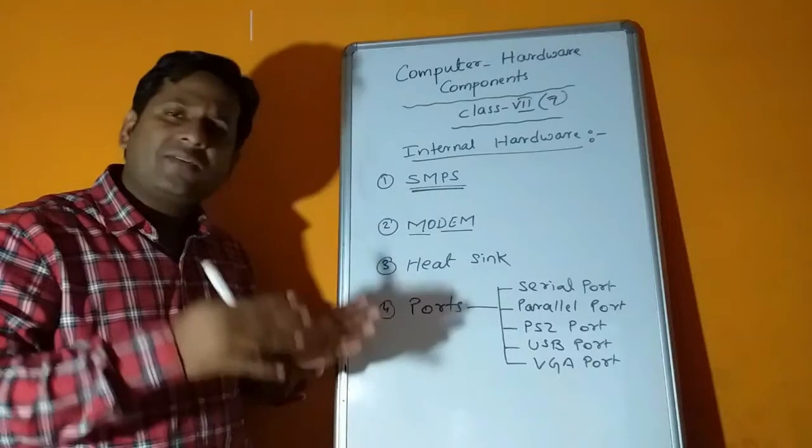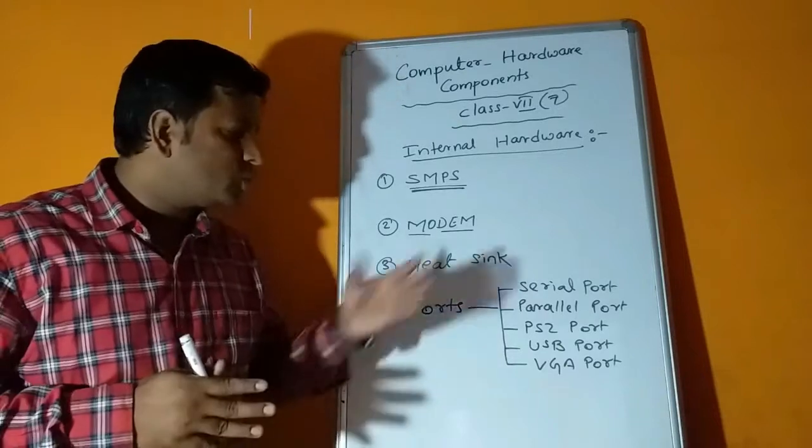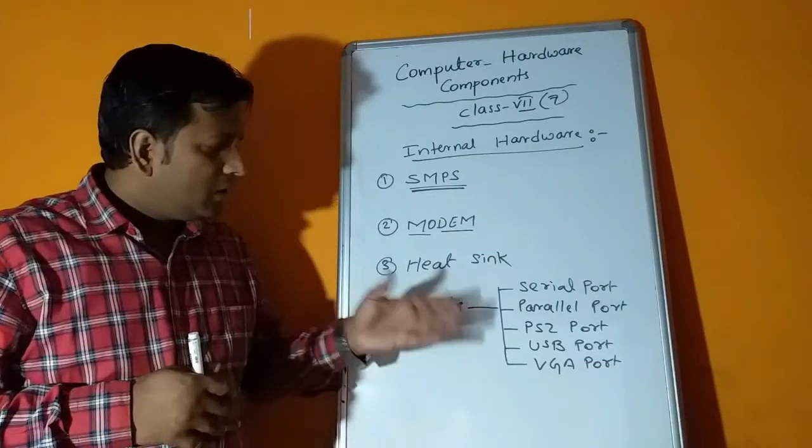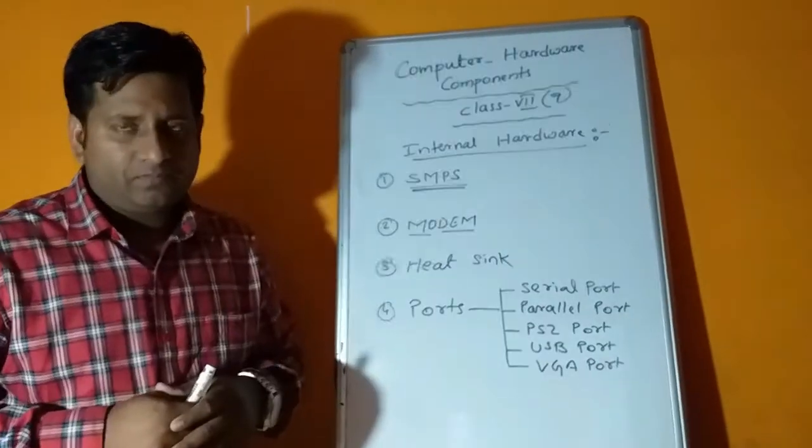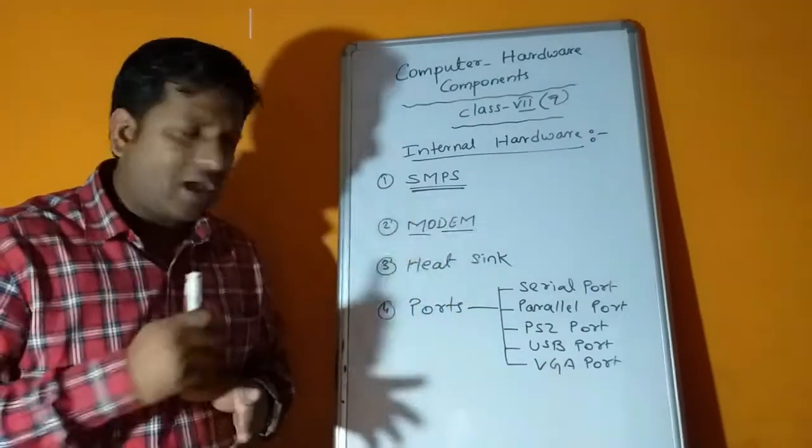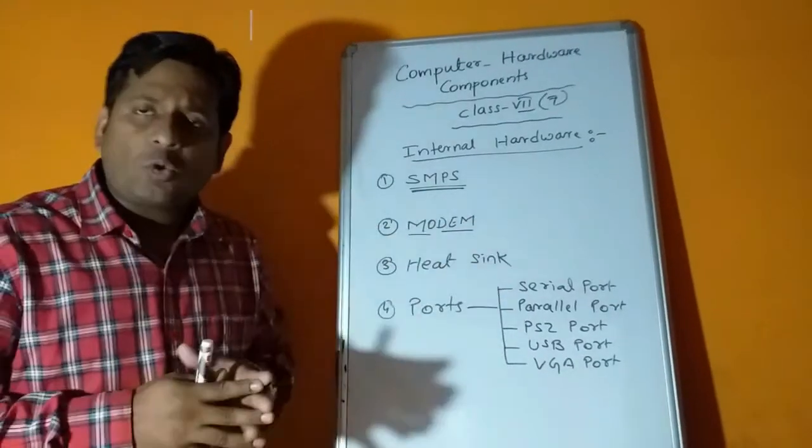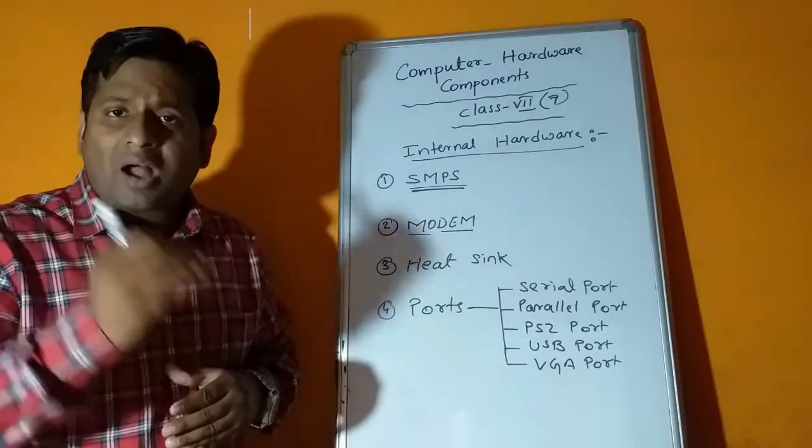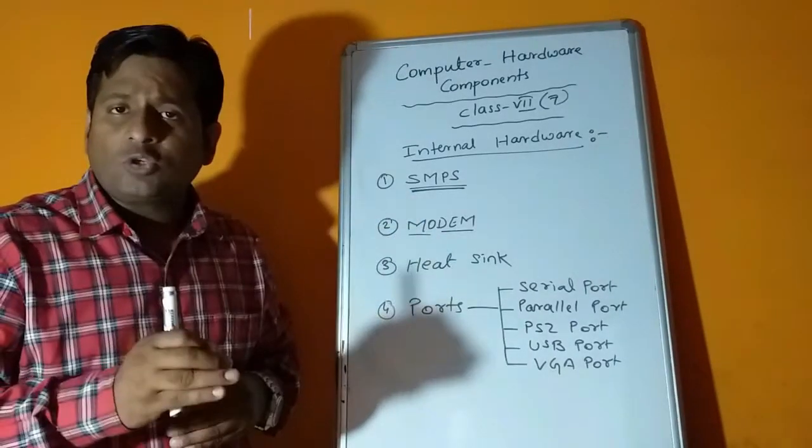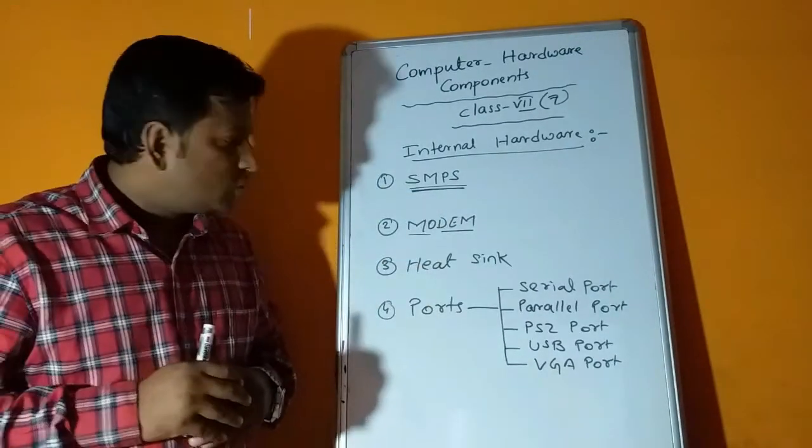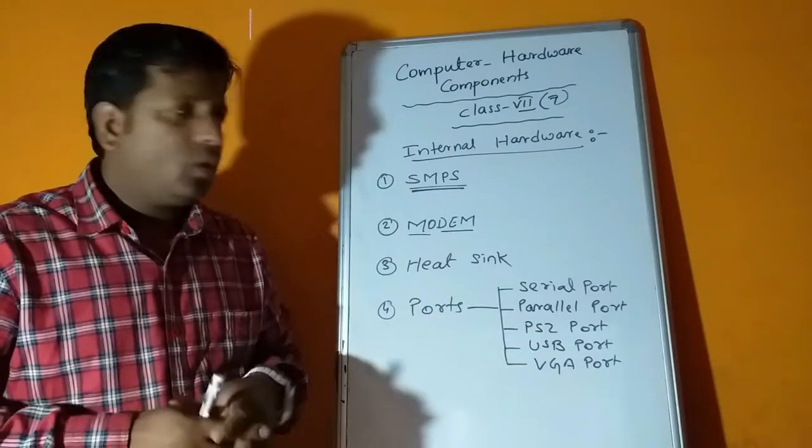Next we have USB - Universal Serial Bus. Pen drives, modern keyboards and mouse, printers, all the latest devices are connected to USB ports. Next we have VGA - Video Graphics Array. VGA ports are used for better or HD quality videos. This port is used for video cards.